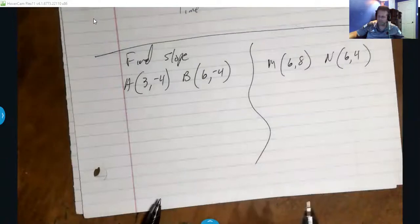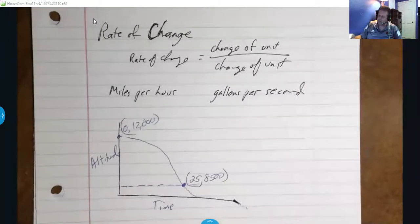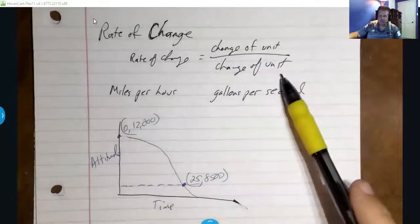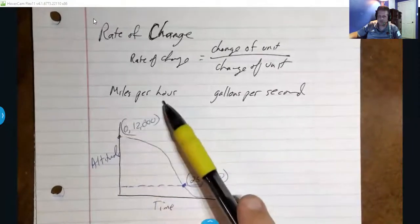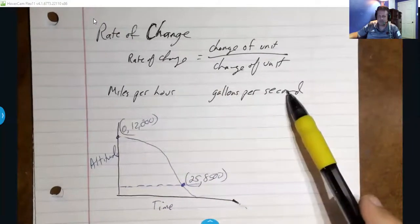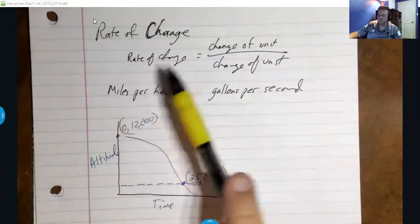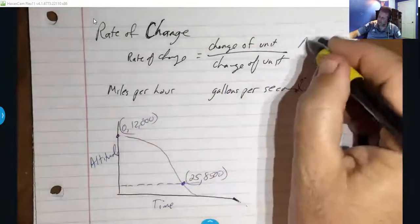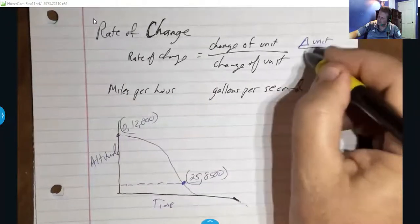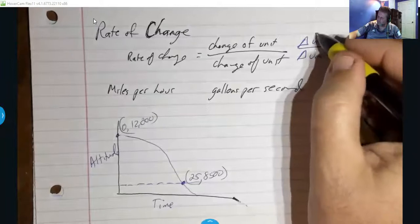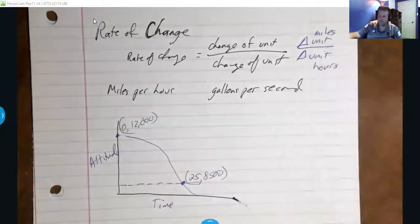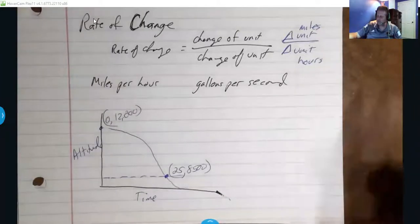Now let's talk about rate of change — it basically means the same thing as slope. Rate of change is the change of a certain unit over the change of another unit, like miles per hour or gallons per second. Time is usually almost always on the bottom. It's the same as saying the change of some unit over the change of a different unit — maybe miles per hours.